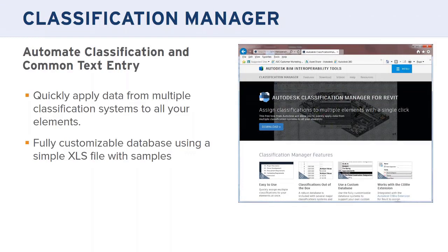All of that is available in the Classification Manager, which allows you to easily assign classifications to your elements. Not only that, it allows you to assign multiple classification systems simultaneously — if you pick a Uniformat number, it will automatically apply an equivalent MasterFormat, Table 21, and Table 22 number. The big part with Classification Manager is that it's all based on Excel spreadsheets, so you can have the default classification systems or build your own very quickly.